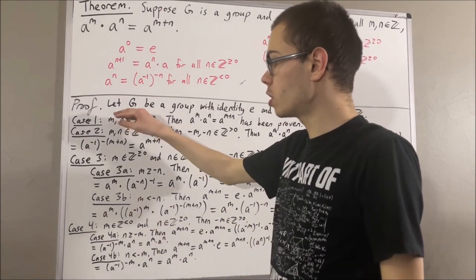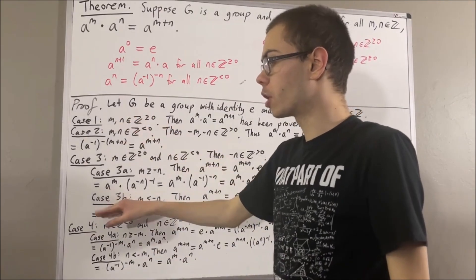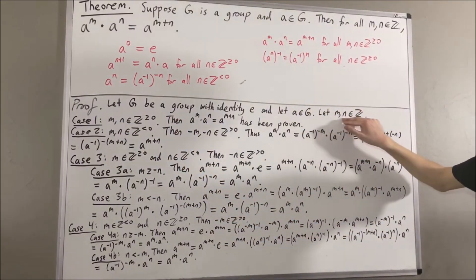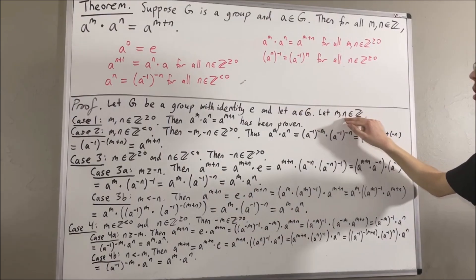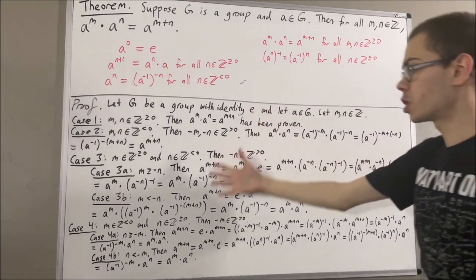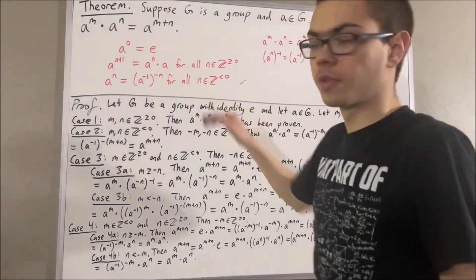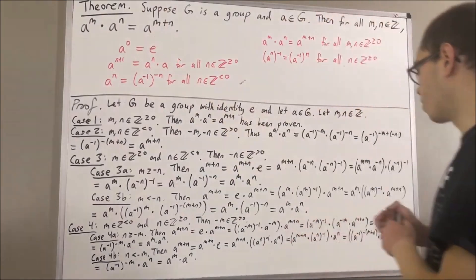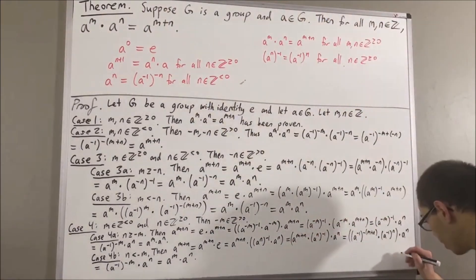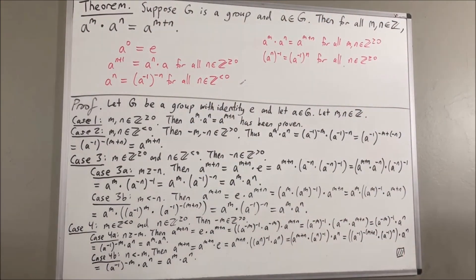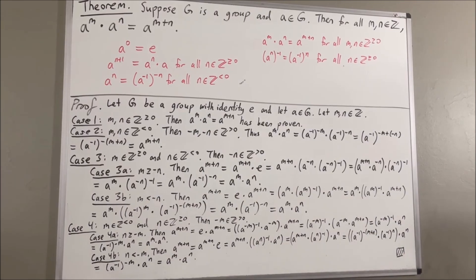Cases 1, 2, 3, and 4 cover all possibilities of what M and N could be. So no matter what integers M and N are, we have shown that this equality is true. This completes the proof. Thank you.